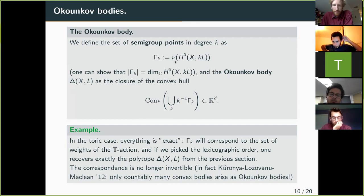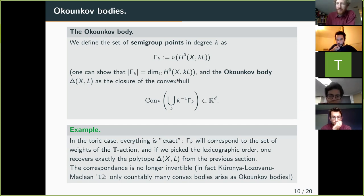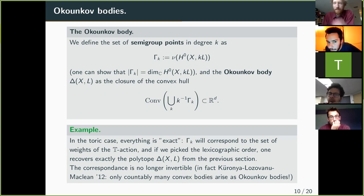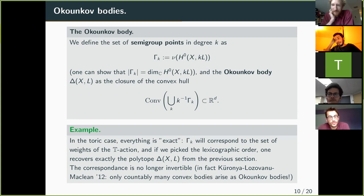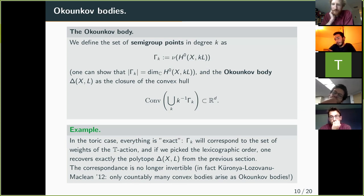We define the Okounkov body as the closure of the convex hull of the union of all semigroup points rescaled by 1/K. For each K, we look at images under ν of sections of KL, scale by 1/K, take the convex hull, and the closure is a convex compact set with non-empty interior — this is the Okounkov body Δ(X,L). Note that this depends on the choice of point P and order on N^D, but changing these choices yields essentially equivalent objects. In the toric case, with the correct order, the semigroup points are exactly the weights of the torus action, recovering the toric polytope from the first section.